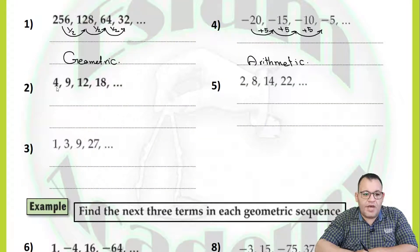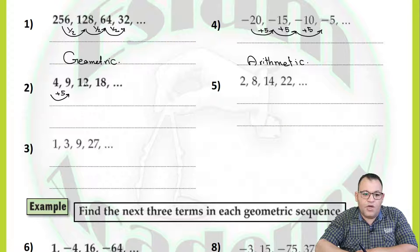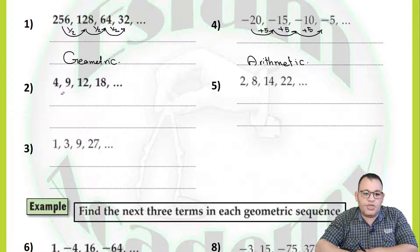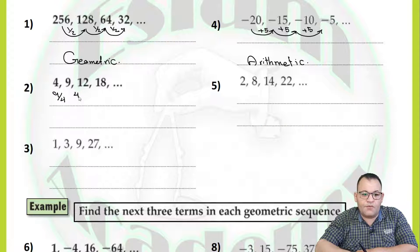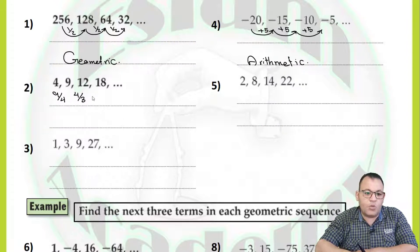For the next question, we have 4, 9, 12, and 8. First I'll check if it's arithmetic. 9 minus 4 equals positive 5, and 12 minus 9 equals positive 3. The common difference is not the same, so it's not arithmetic. Now checking if it's geometric: 9 divided by 4 equals 9 over 4, and 12 divided by 9 equals 4 over 3. The common ratio is not the same, so it's not arithmetic and not geometric — it's neither.